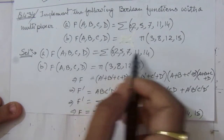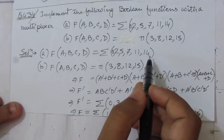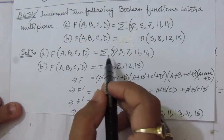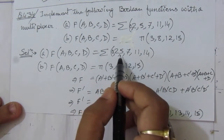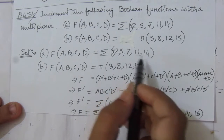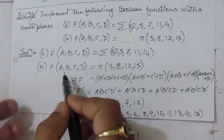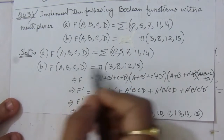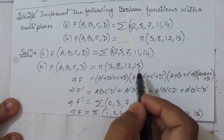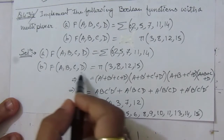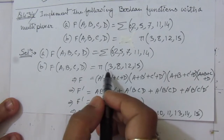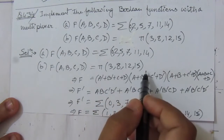The first term is already in sum of minterms expression: sum of 0, 2, 5, 7, 11, and 14. The second term is in product of maxterms expression: F(A, B, C, D) is the product of those maxterms.